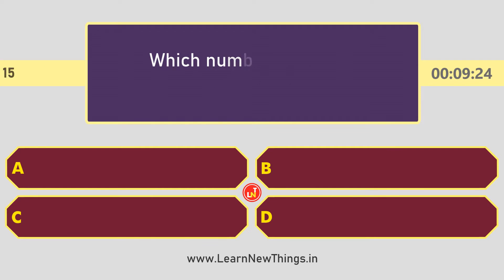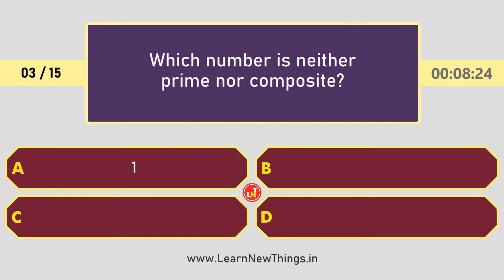53. Which number is neither prime nor composite? The answer is 1.